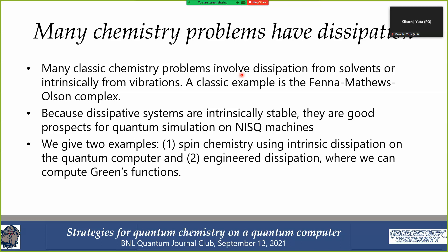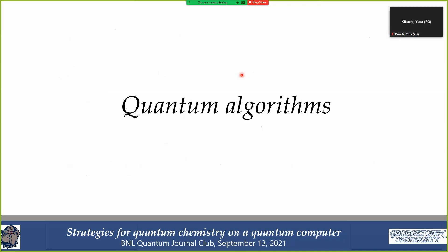I'll discuss two examples. One uses the intrinsic dissipation of the IBM quantum computer as the dissipator for quantum calculations — a neat idea done by my graduate student. The other involves completely engineering the dissipation: creating a bath, letting the system interact with it, integrating out the bath to get a master equation, and solving that master equation on the quantum computer. We can even extract Green's functions on NISQ machines.